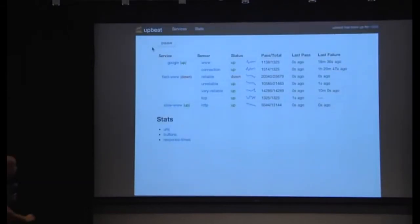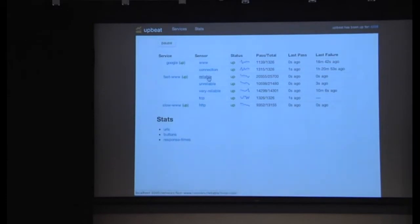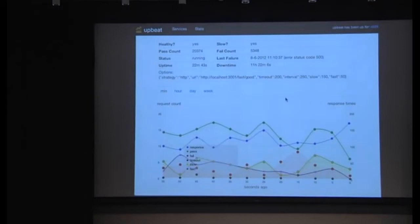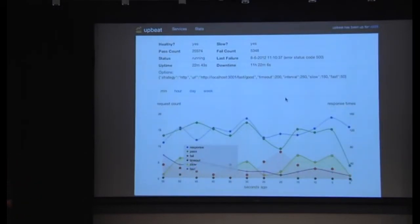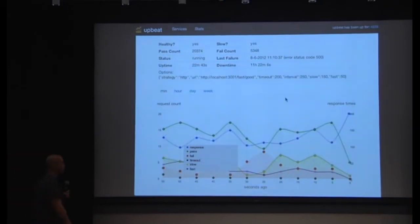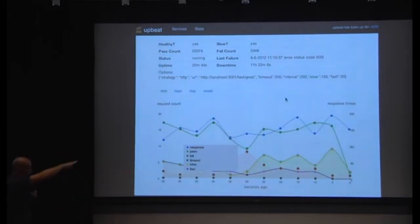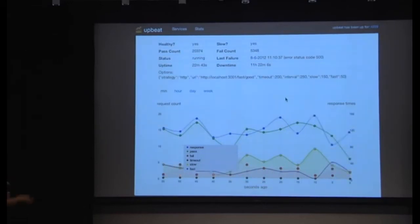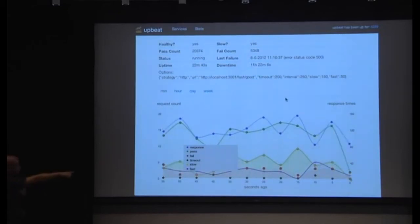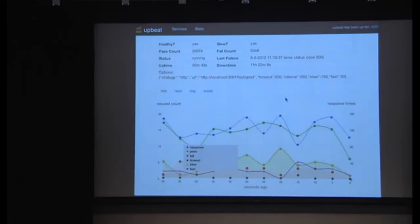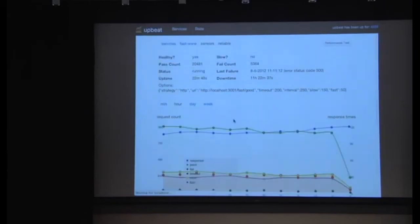Alright, so here is upbeat in all its glory. So let me show you a sample sensor here. So this is a what I call a reliable service. So the mock server is programmed to fail every once in a while. So it gives you interesting stats. But what you're seeing here is that those reds are failures. So you're seeing way more green than red. So it's sort of reliable. The black dots are timeouts. So there are a few timeouts there. And again, the blue is the response time. And this is what it looks like over the past hour.